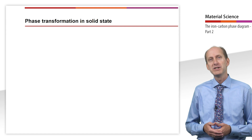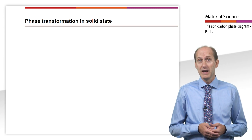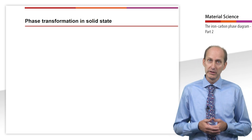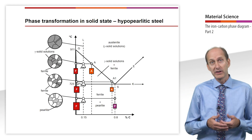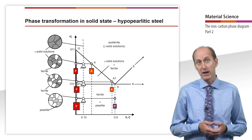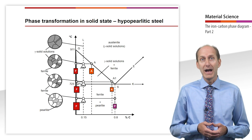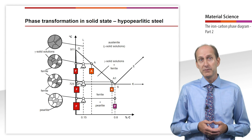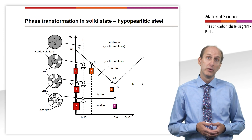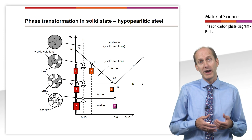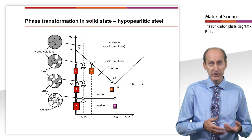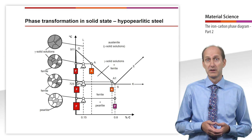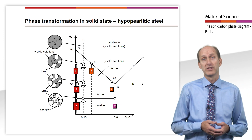Next, let's look at the phase transformation in the solid state, which is important for steels. An important distinction has to be made between hypoeutectoid and hypereutectoid steel. Steels with a carbon content below 0.8% are referred to as hypoeutectoid steels. Above the line GS there are unsaturated homogeneous gamma solid solutions, with a carbon content of 0.15% in the example shown here. The transition from the gamma to the alpha phase starts after reaching line GS, which shifts to lower temperatures as the carbon content increases.